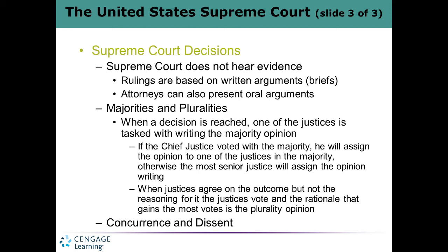Sometimes justices agree for the same reason — if all nine agreed for the same reason, that's a unanimous decision, the best decision you can get. An example is Brown v. Board of Education, where there was a nine-to-nothing decision that said you have got to desegregate public schools with all deliberate speed. Sometimes justices agree unanimously but for different reasons — that's called a concurrent decision. And sometimes justices disagree — that's called a dissenting opinion.